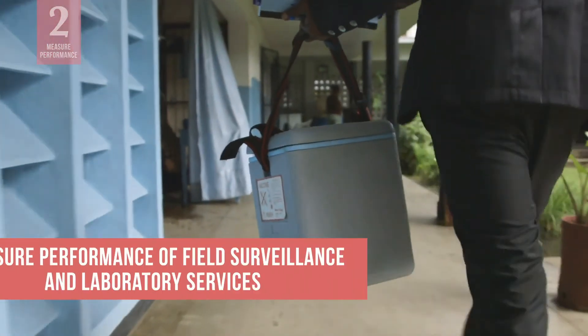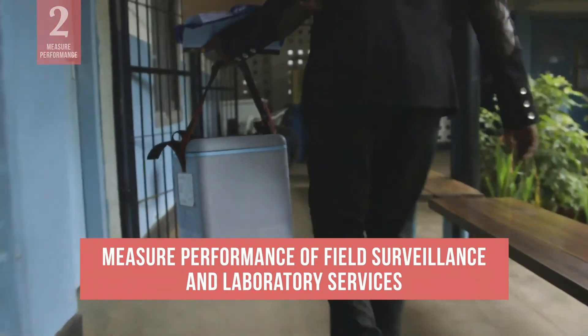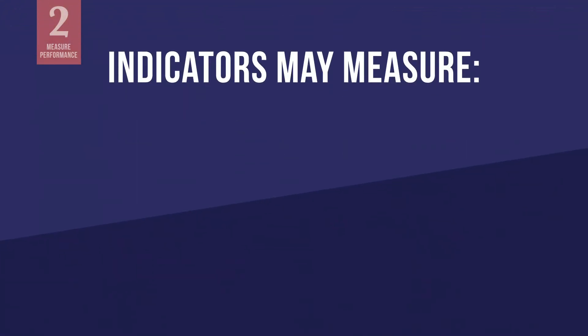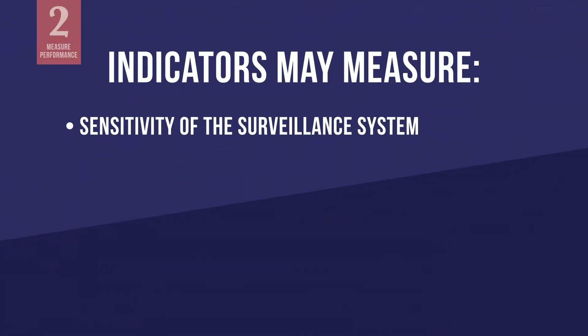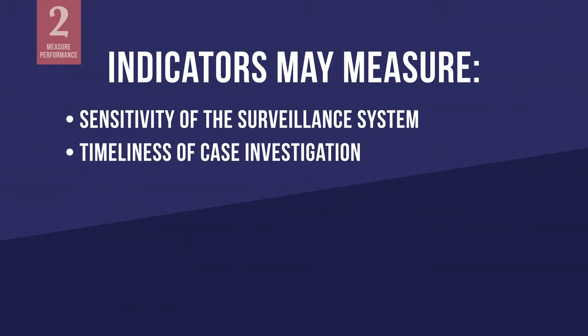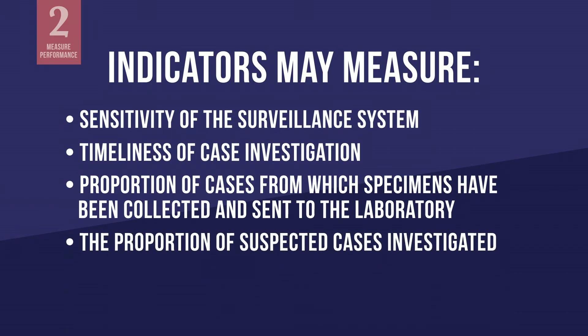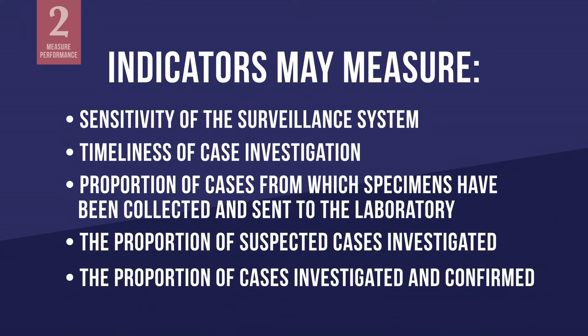This may require indicators to measure the performance of field surveillance as well as laboratory services. While indicators will vary by disease, they may measure the sensitivity or ability of the surveillance system to detect suspected cases of a disease, the timeliness of case investigation following initial notification according to set policy, the proportion of cases from which specimens have been collected and sent to the laboratory, the proportion of suspected cases investigated, and the proportion of cases investigated and confirmed.